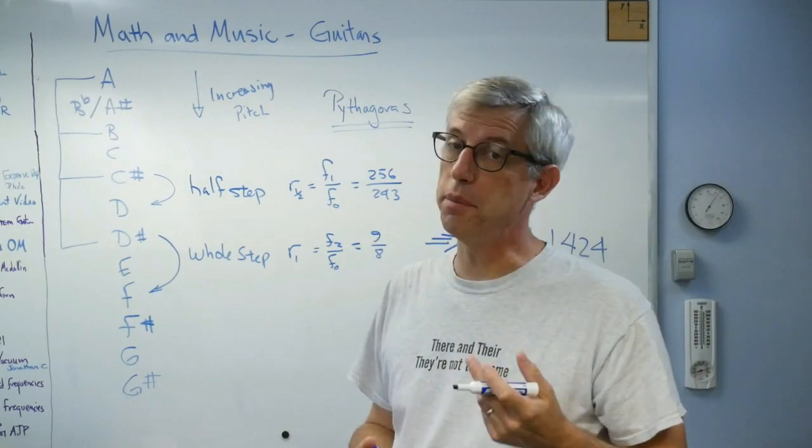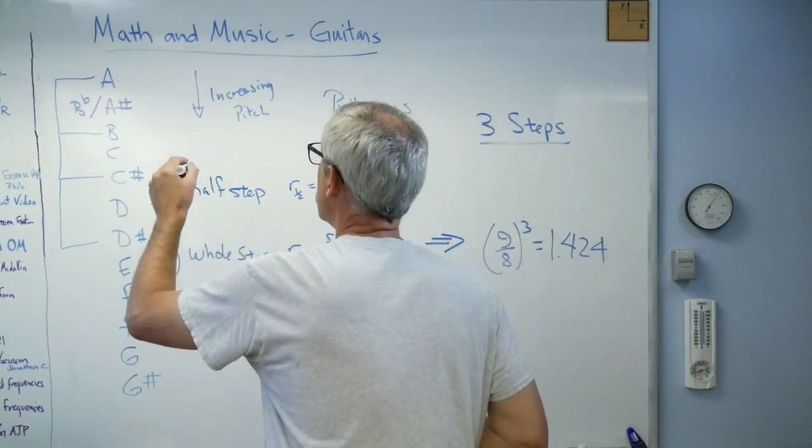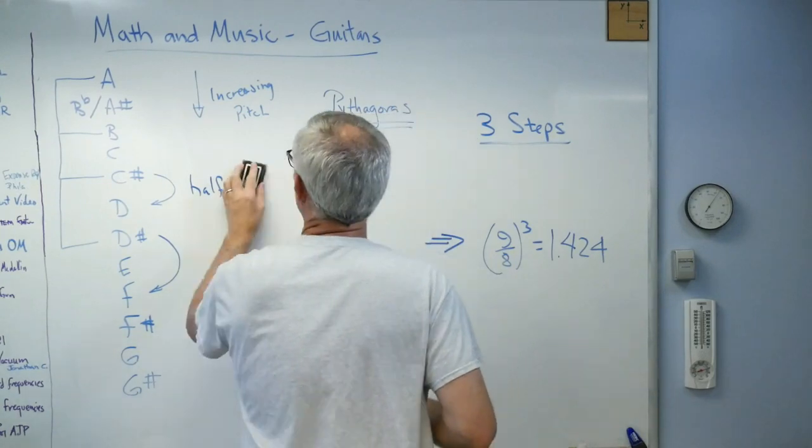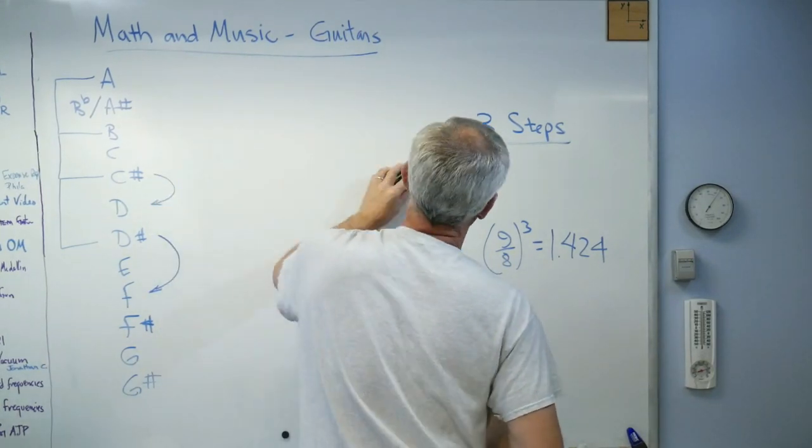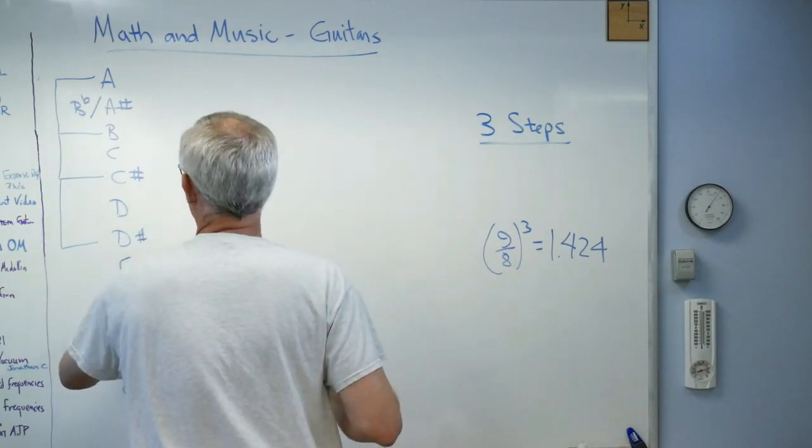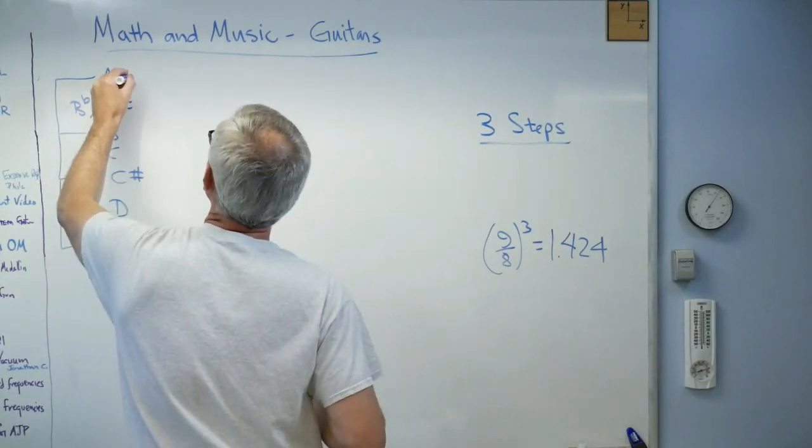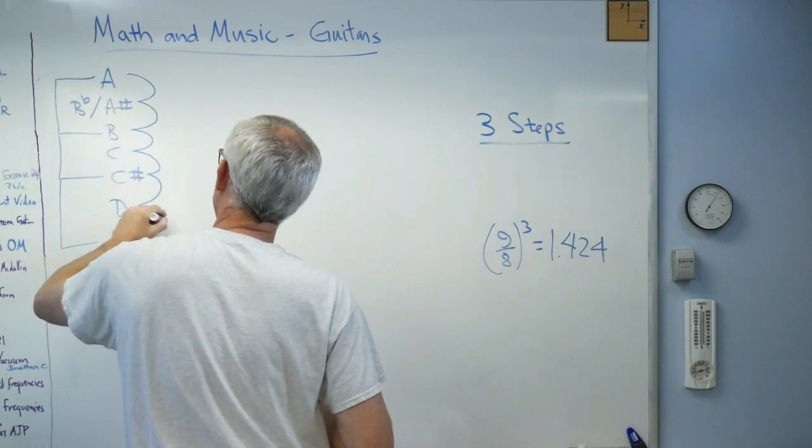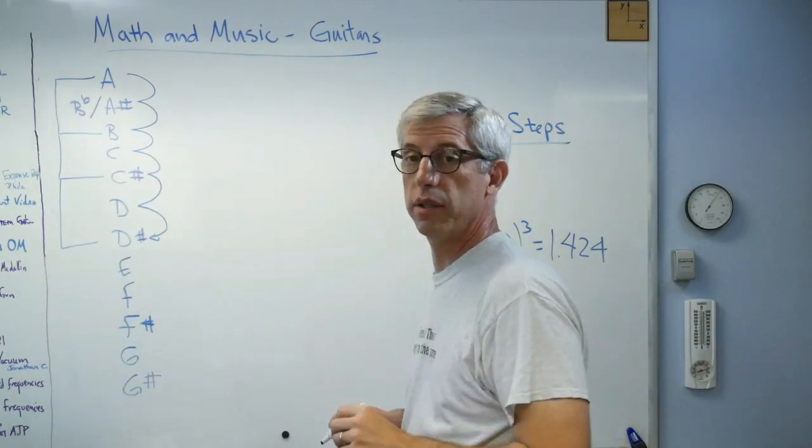Now, three whole steps better equal six half steps. I should be able to go, let me erase some of this stuff here. I'll get rid of all that stuff. And let's see, get rid of that. Okay, so there's one, two, three, four, five, six. Gets me to the same place, right? So this ought to work.